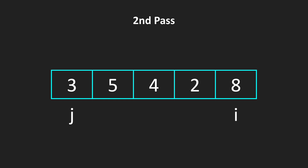After our first pass, our rightmost element is sorted. So at i, 8 is sorted. So we are moving our i, which means that we only need to sort four elements now, because the last element, the rightmost element, is already sorted.